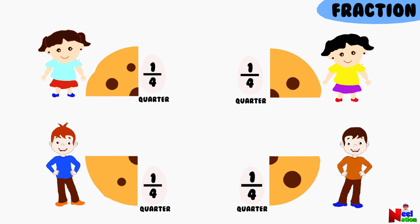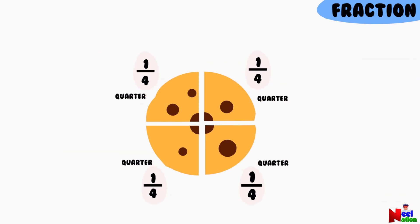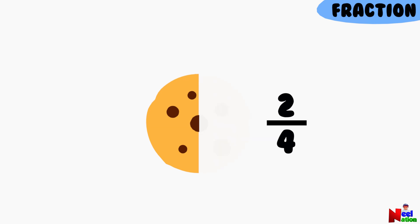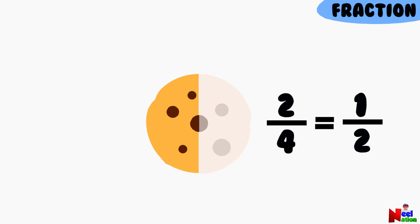One fourth is also called a quarter. When you have one cookie and cut it into four equal pieces, each piece is called a quarter. So, if you take two of those quarters, you have two out of the four pieces, which we write as two fourths. But guess what? If we put those two pieces together, they make one whole half of the cookie. So, two fourths is the same as one half. It means you have half of the cookie.